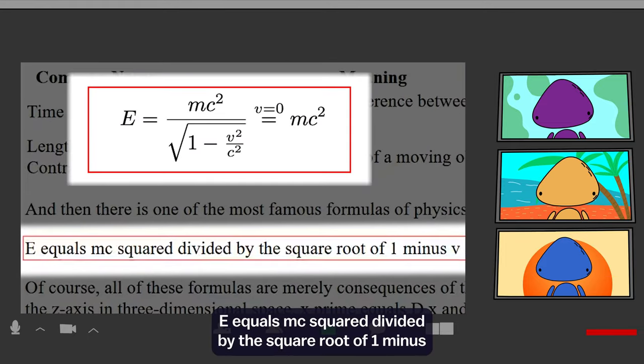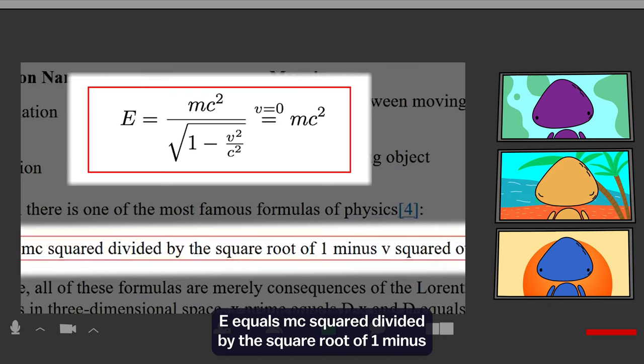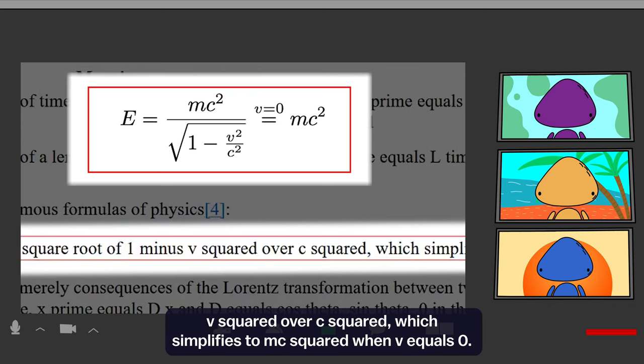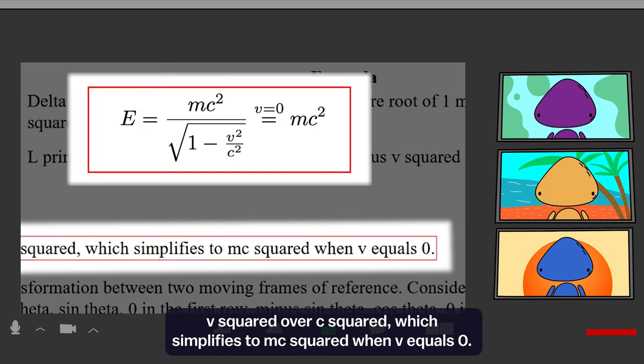The closed integral of E dot ds equals one over epsilon zero times the triple integral of rho dv. E equals mc squared divided by the square root of one minus v squared over c squared, which simplifies to mc squared when v equals zero.